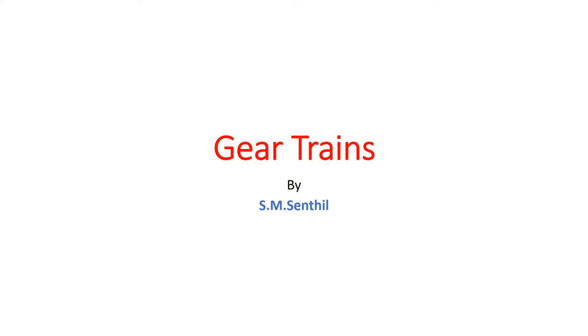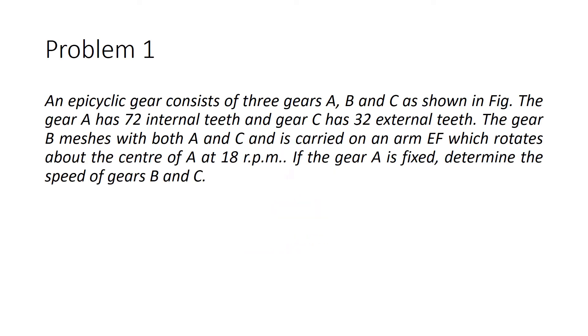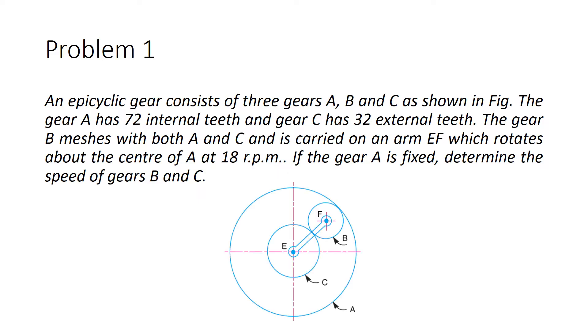Good day to all. Let us see a problem on gear trains. I am Senthil from Kongu Engineering College. The problem is: an epicyclic gear consists of three gears A, B, and C as shown in the figure. Gear A has 72 internal teeth and gear C has 32 external teeth.